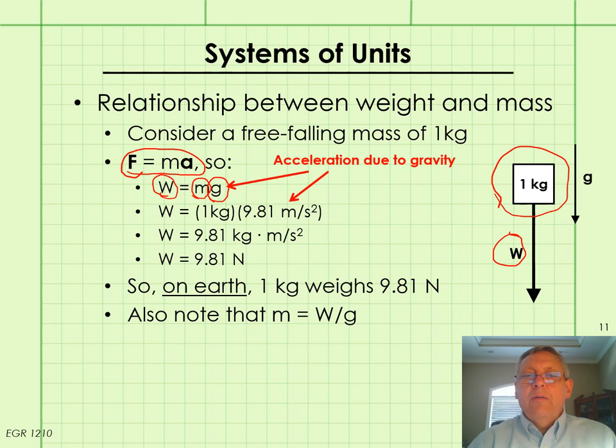Now, this equation W equals mg should look familiar. We arrived at this several slides ago when we were discussing Newton's law of gravitation. So we have an equation with just one unknown. So we'll fill in the mass of one kilogram. The acceleration due to gravity, which we've stated we're going to assume for this course is 9.81 meters per second squared. We do the math here and combine the units. We end up with 9.81 kilogram meters per second squared. And remember, this is what we said that we call the Newton. So the weight of the one kilogram object is 9.81 newtons.